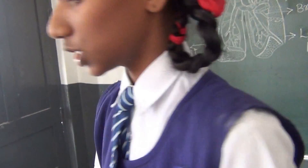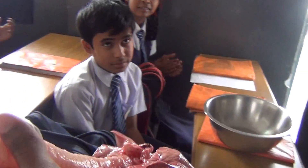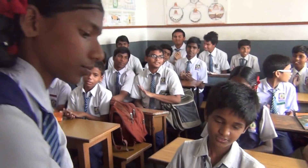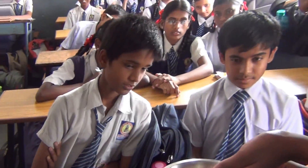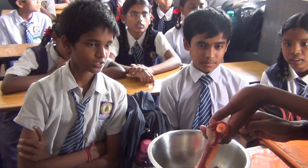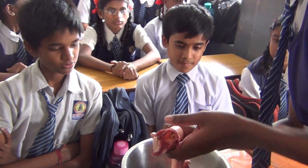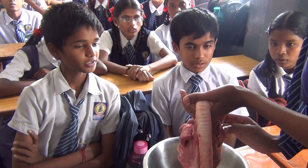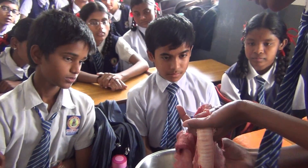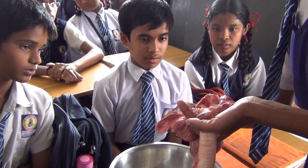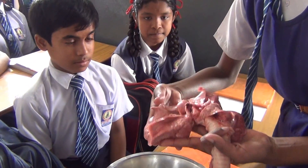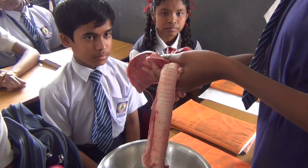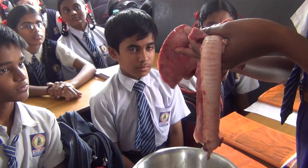We will discuss from each bench. This is the trachea; C-shaped cartilage bones prevent the trachea from collapsing. The trachea is again divided into two parts — bronchi. Each bronchus is again divided into several branches called bronchioles. These lungs are present on either side of the heart, and these lungs are spongy and elastic.